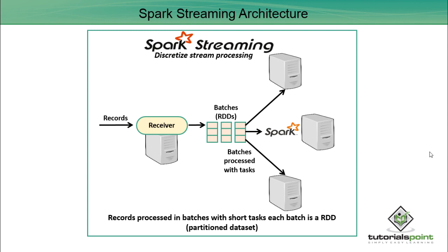Spark Streaming uses discretized stream processing. It takes data in a parallel fashion — not sequentially — and gathers data to form micro-batches to discretize it. The Spark Engine then runs tiny tasks to process the data, optimizing latency. Spark tasks are assigned to workers dynamically based on available resources and data locality. Since all data in Spark is treated as RDD, streaming data can also be processed using any Spark library.